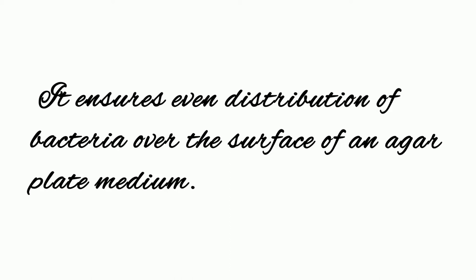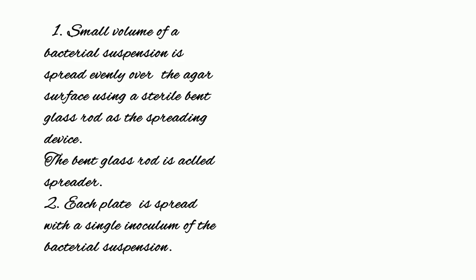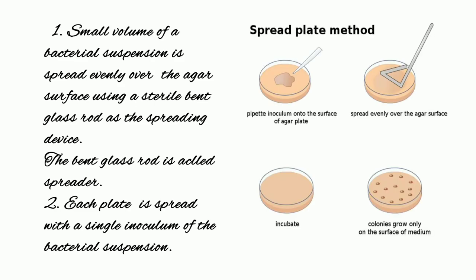Now let us start with the protocol for this method. We are going to take a small volume of the bacterial suspension and spread it evenly on the agar surface using a sterile bent glass rod as the spreading device. This bent glass rod is called the spreader. An important point is that each medium plate is spread with a single inoculum of the bacterial suspension.